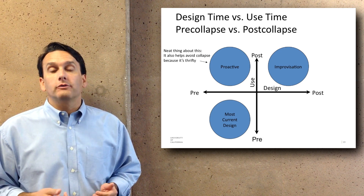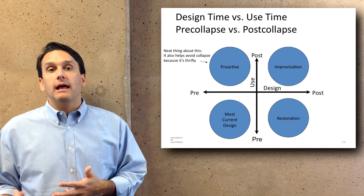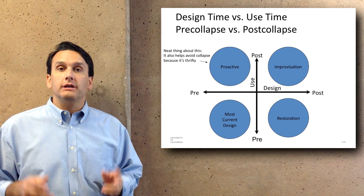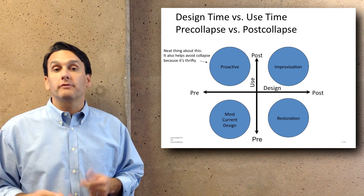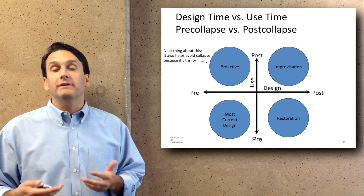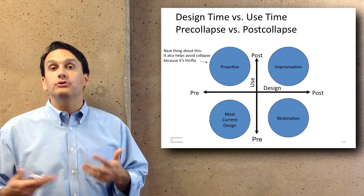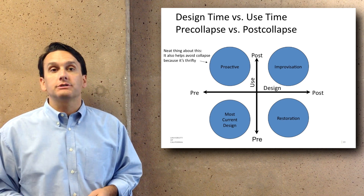The final quadrant — designing in a post-collapse world for use in something approximating a pre-collapse world — would be restoration: trying to re-bootstrap civilization after collapse has occurred.